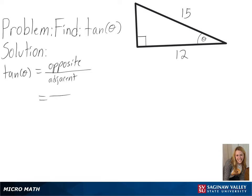We already know our adjacent side is 12, but we can use the Pythagorean theorem, or a squared plus b squared equals c squared, to solve for our opposite side.